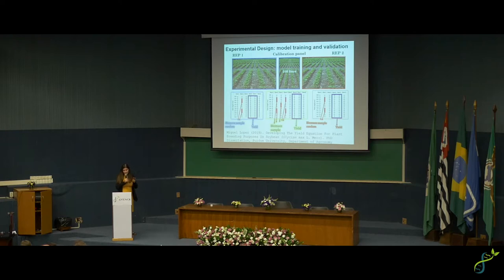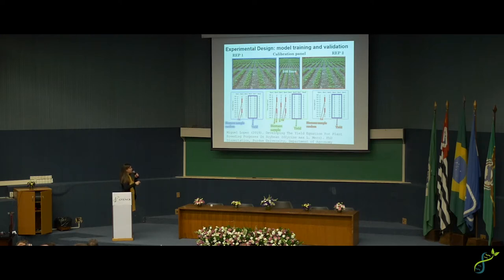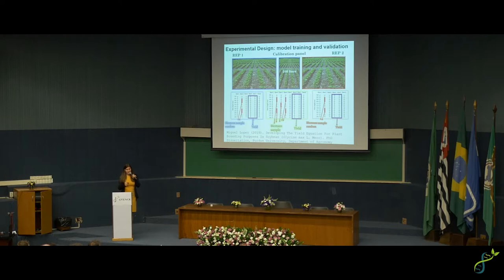In designing our experiment, we had to collect biomass data to calculate components of the Monteith equation. We had a calibration panel — a random subset of 100 lines — where biomass sampling was done intensively. This allows you to develop your remote sensing prediction equation and then validate it in your other replications. Biomass sampling is extremely labor intensive, so you have to be smart about how you do it.